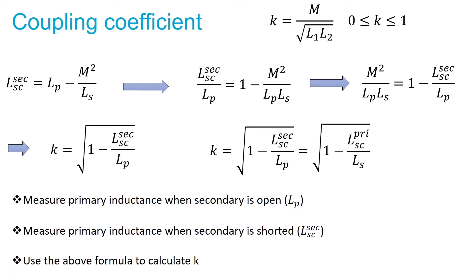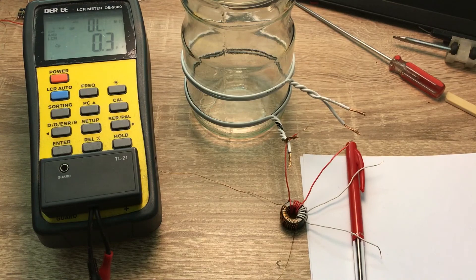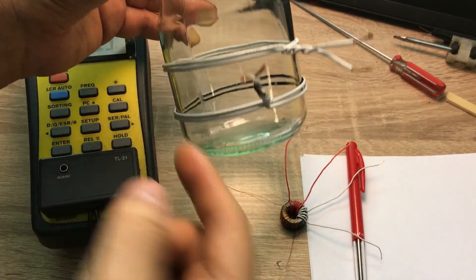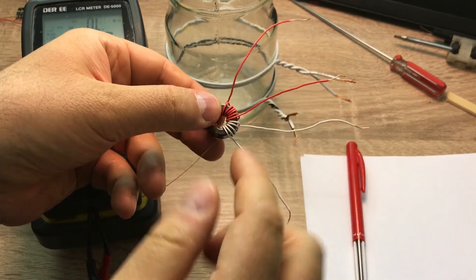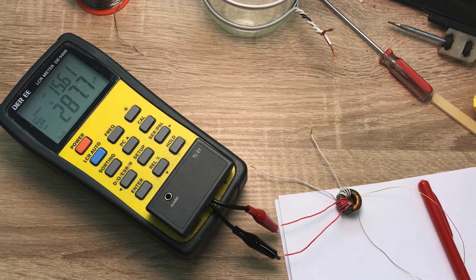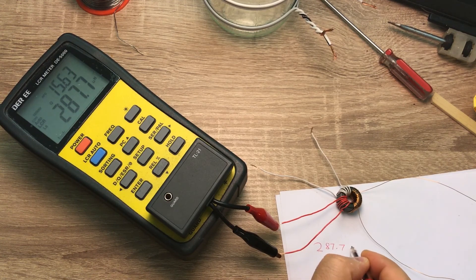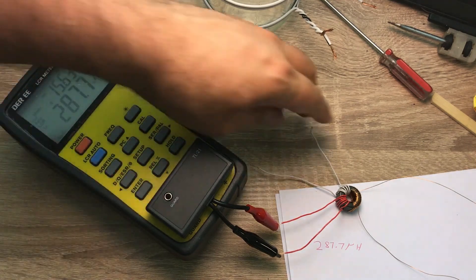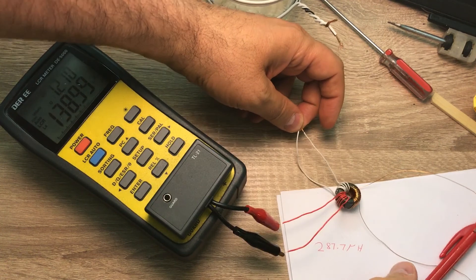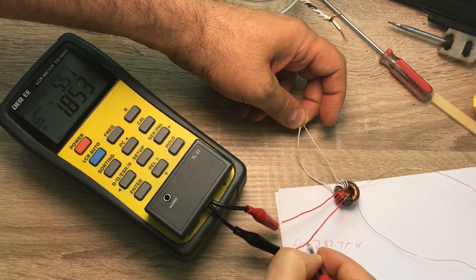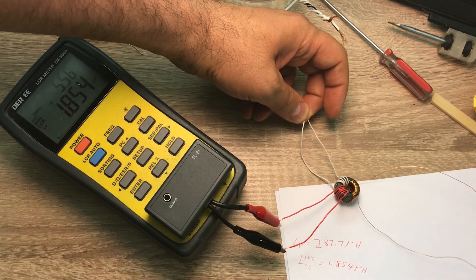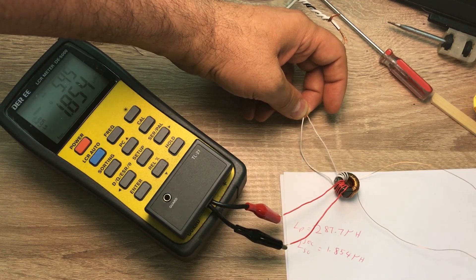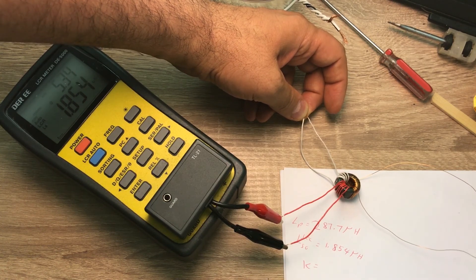Now I'm going to do the measurements on two different coils and see the coupling coefficients for a ferrite core and for an air core. For the ferrite core winding, measuring at 100 kHz, the primary inductance is 287.7 μH. When I short-circuit the secondary, it measures 1.854 μH. So LP = 287.7 μH and L_short-circuit-secondary = 1.854 μH. From these two numbers I can calculate the coupling coefficient.